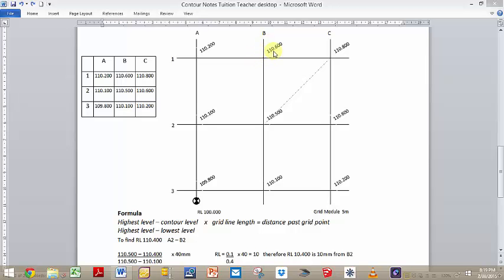In between 110.2 and 110.6 we have a 400 millimeter rise. When you're doing a map, they might want you to plot the height of 110.4. What we're going to look at is how we achieve that height. We have a formula: the highest RL minus the contour level, divided by the highest RL minus the lowest RL, then times it by the grid line length.